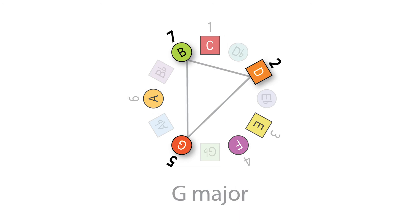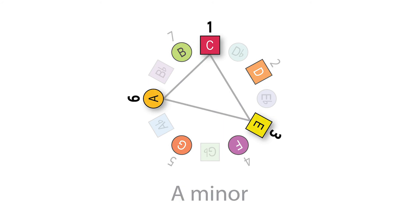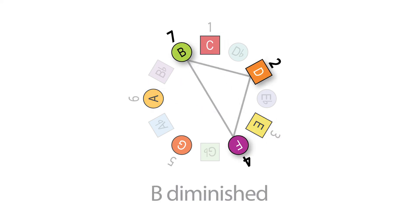G major is built using the same pattern, the same logic, starting on scale degree 5 in the key of C, with notes G, B, and D. Then A minor starts on scale degree 6, playing every other note: A, C, and E, or intervals 6, 1, and 3. And then the last chord starts on scale degree 7, B, in the key of C, with notes B, D, and F.